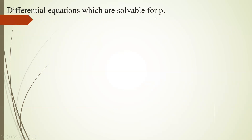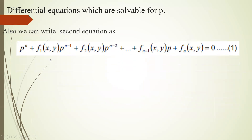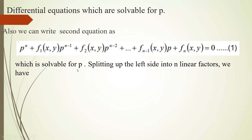For differential equations soluble for p, we split the left side into n linear factors. The equation p^n + P1·p^(n-1) + ... + Pn = 0, which is degree n in p, is factored into n linear factors: (p - f1(x,y))·(p - f2(x,y))·...·(p - fn(x,y)) = 0.